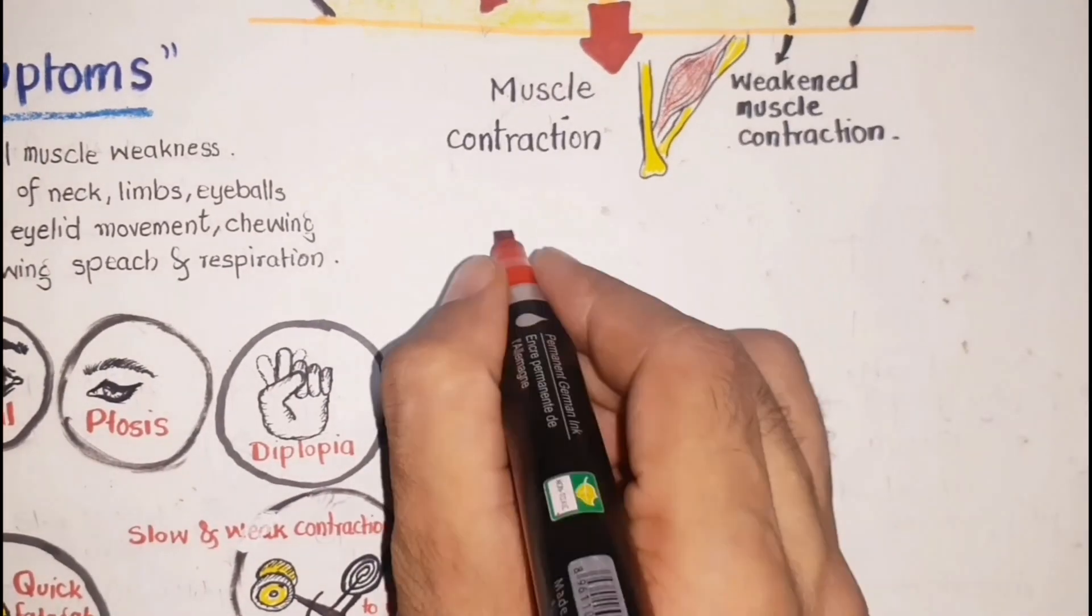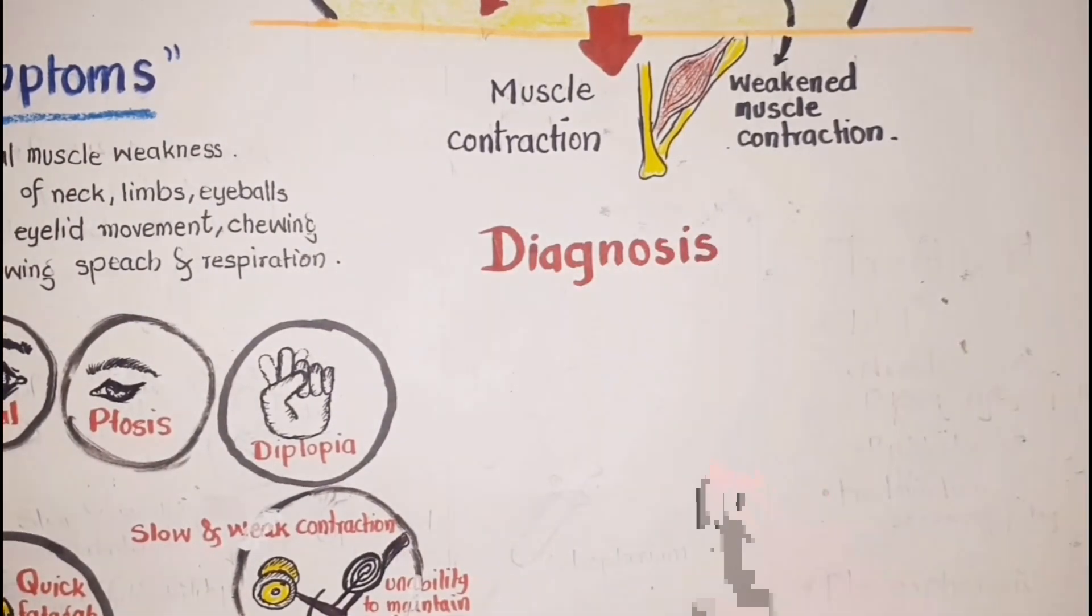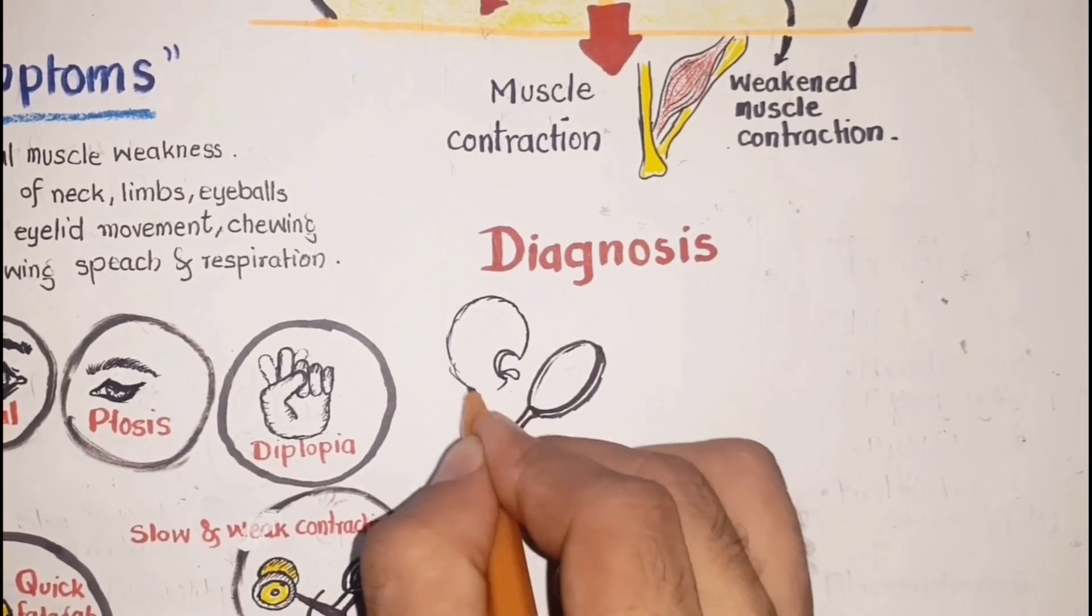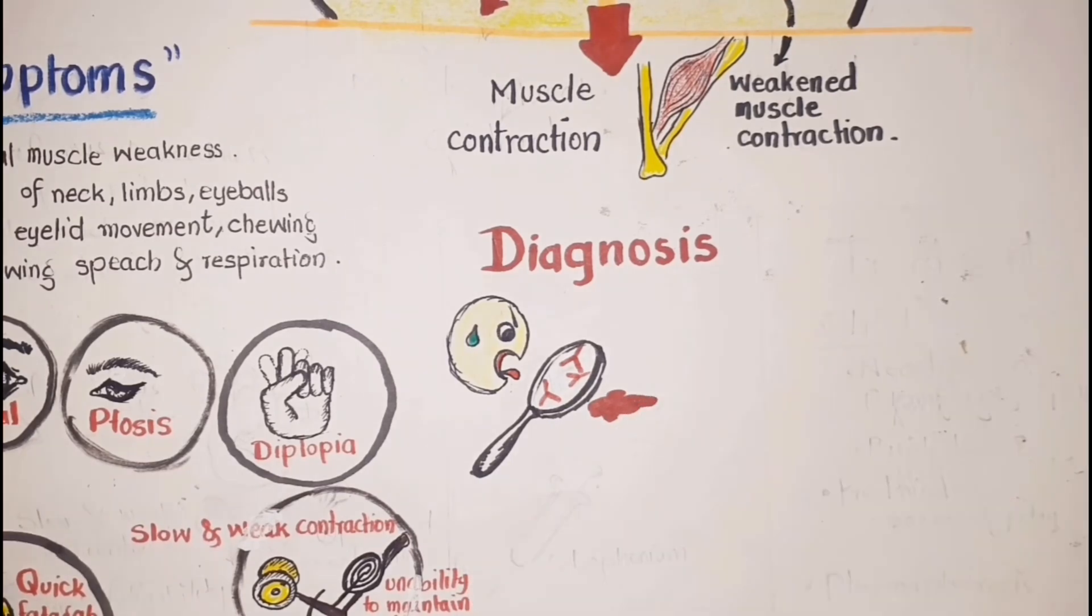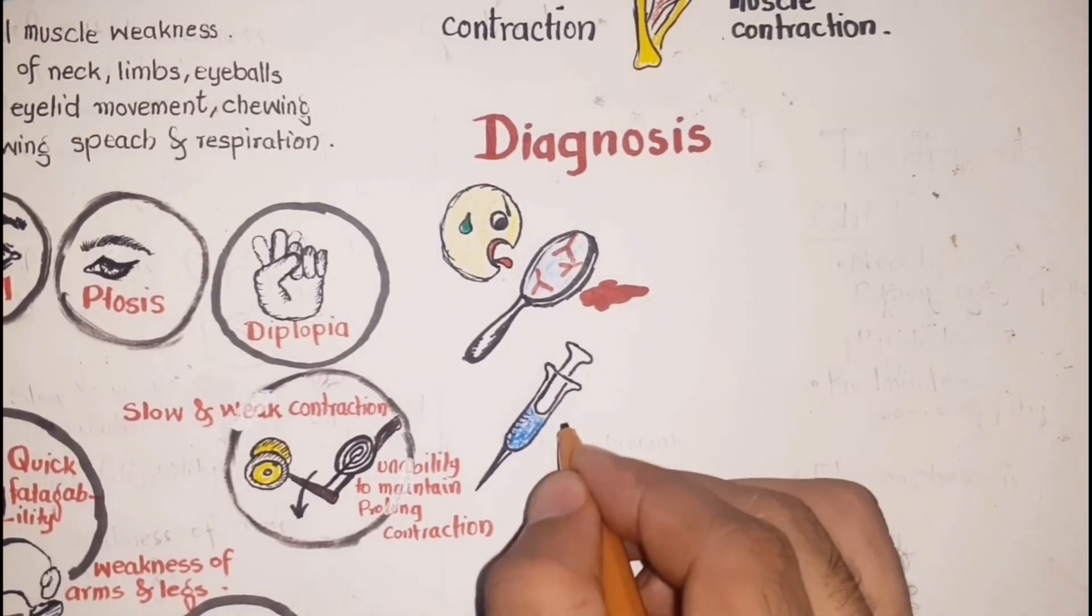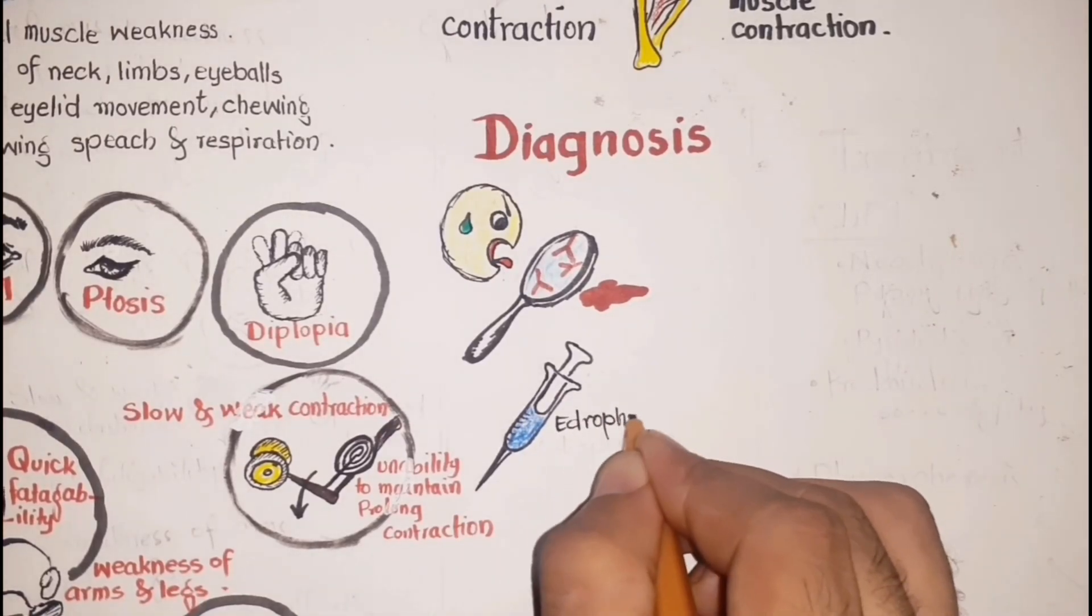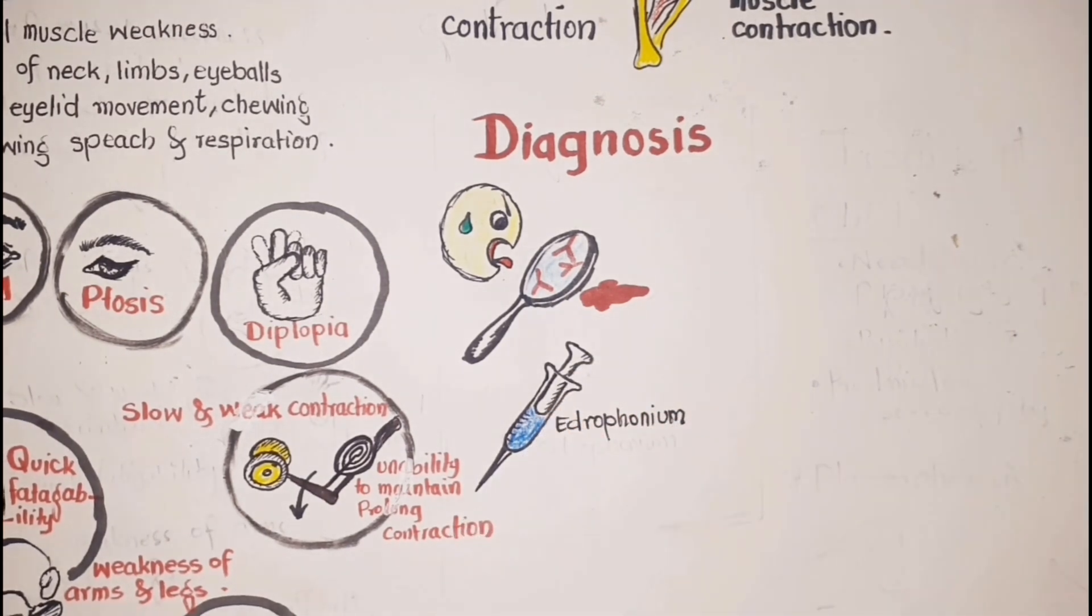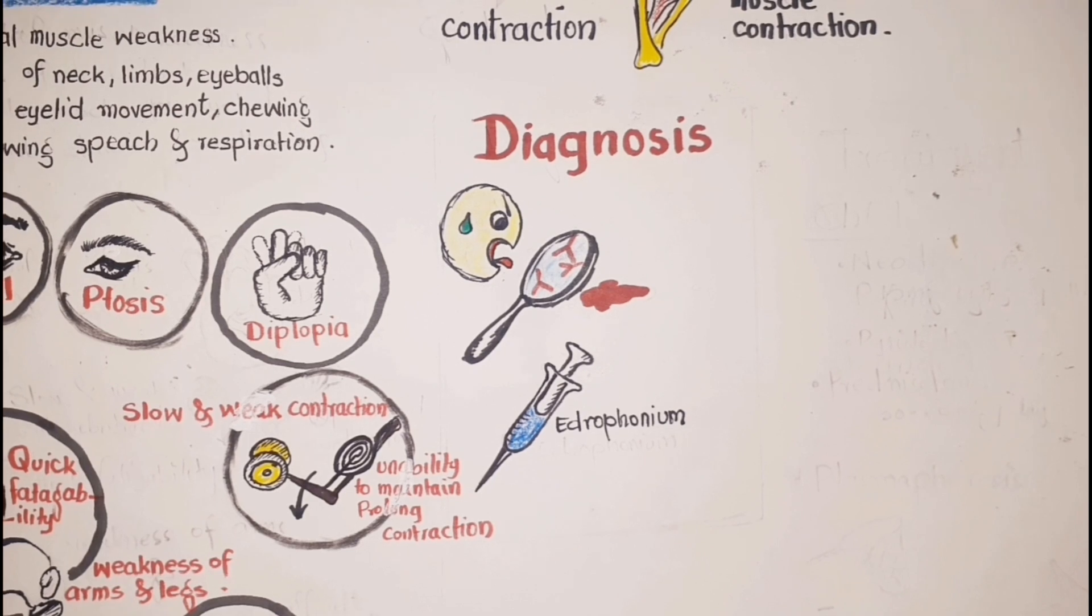The diagnosis of myasthenia gravis is based on the detection of antibodies against the acetylcholine receptors in the body and also through the administration of short-acting anticholinesterase agent called edrophonium as these patients show quick improvement in strength in response to administration of edrophonium.